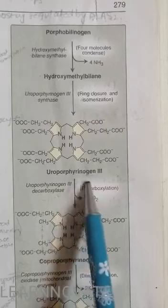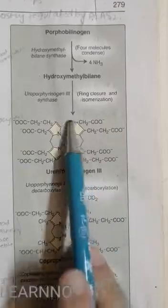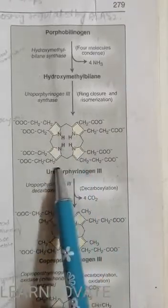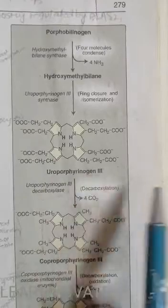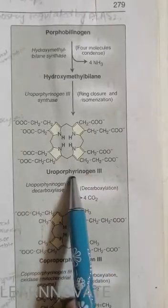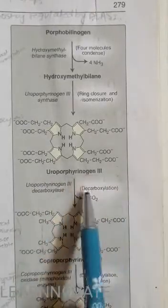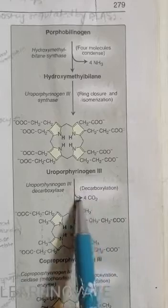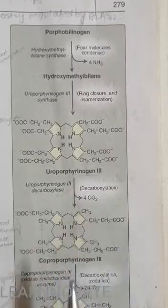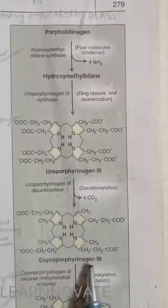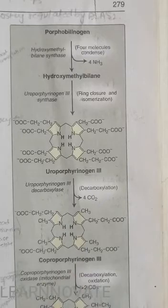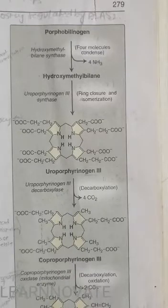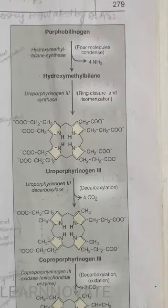Uroporphyrinogen III is a ring-shaped molecule. What happens next is the decarboxylation of this molecule: by decarboxylation there is a release of four carbon dioxide molecules and the formation of coproporphyrinogen III. Coproporphyrinogen III is the compound present in the step after the formation of uroporphyrinogen III.